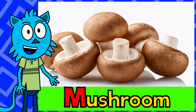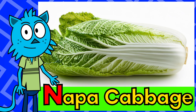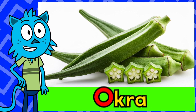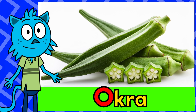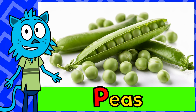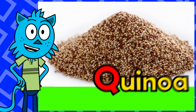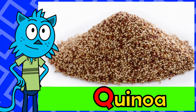M for mushroom, mama, mushroom. N for napa cabbage, na-na, napa cabbage. O for okra, wa-wa, okra. P for peas, ba-ba, peas.